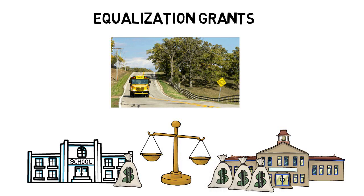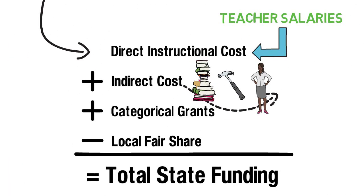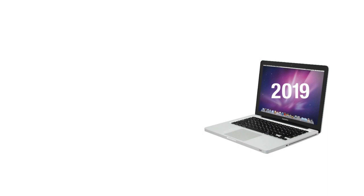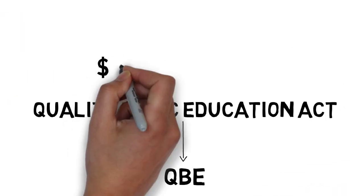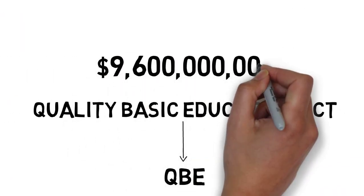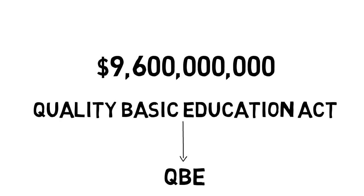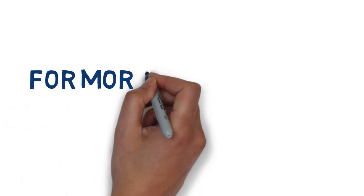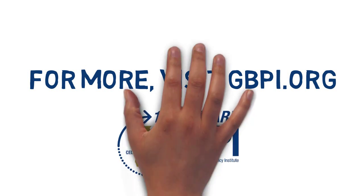There's much more to QBE, but that's the basics for how Georgia funds schools. The Quality Basic Education Act was ahead of its time, but that was a long time ago. By reference, you're watching an online video about a formula that was written when less than 10% of all houses in the US even had a computer — the same basic formula that dictated where over $9.6 billion went in 2019. To learn more about where those billions of dollars came from, as well as where they're going, head to GBPI.org.